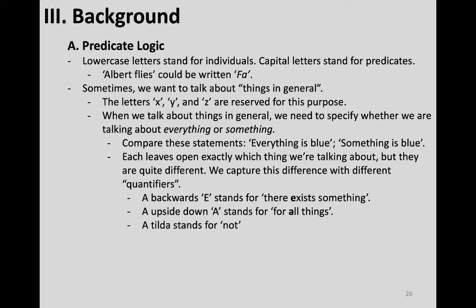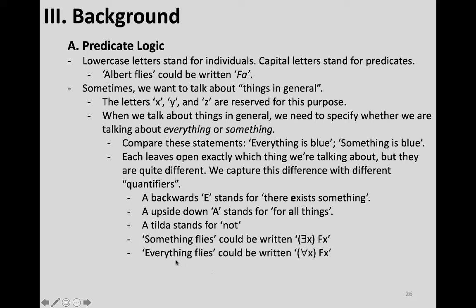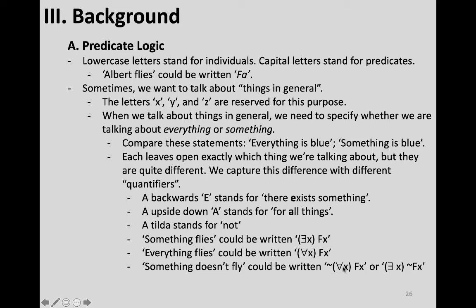So 'something flies' would be written as: backwards E, x, Fx — meaning there is a thing x such that it has the property of flying. 'Everything flies' is written as: for all things x, those things fly. You could also say 'something doesn't fly' as: it's not the case that all things x fly, or equivalently, there is something that does not fly.